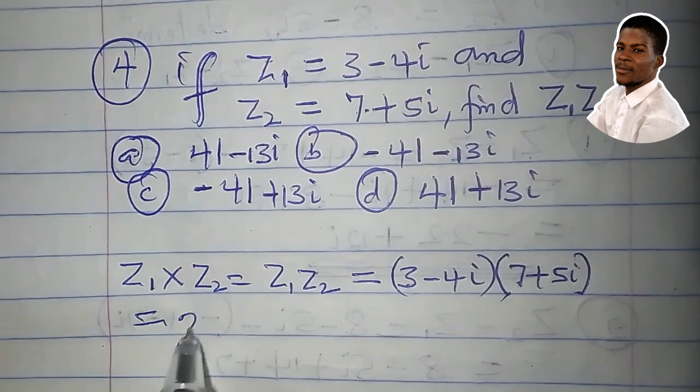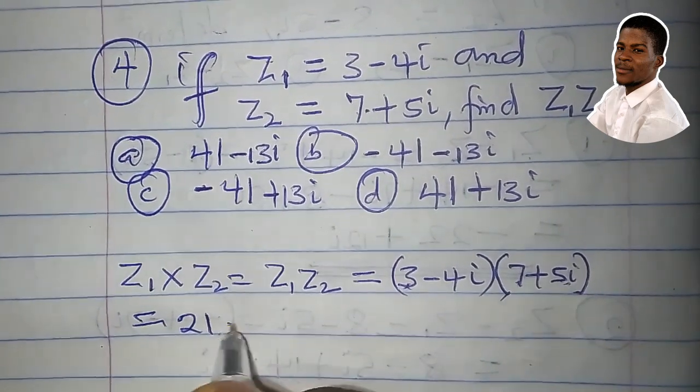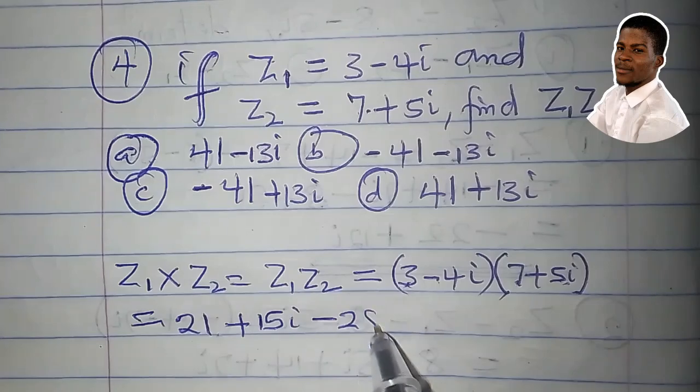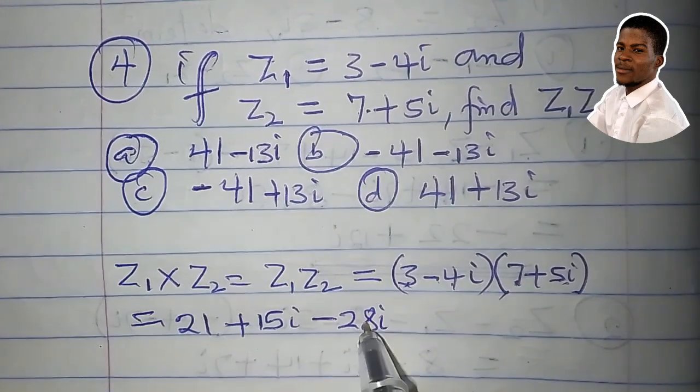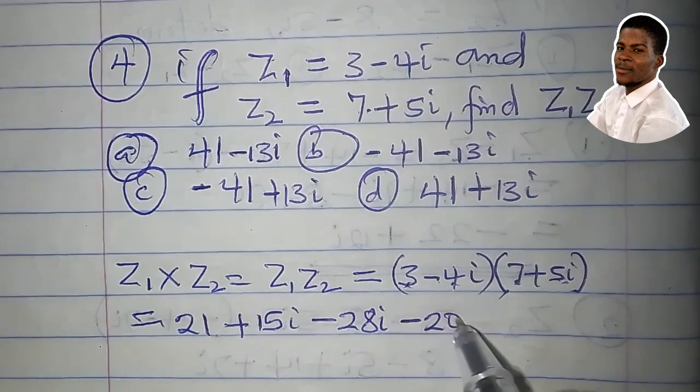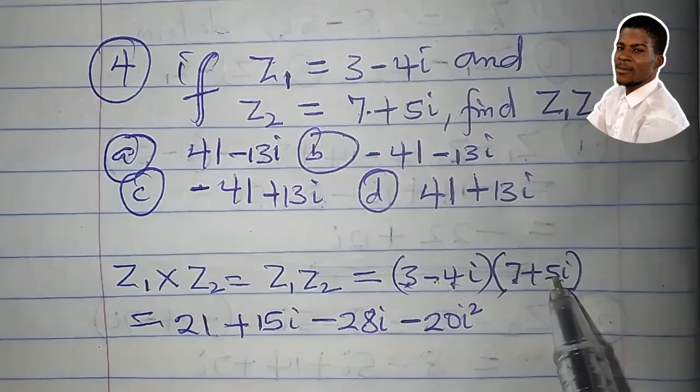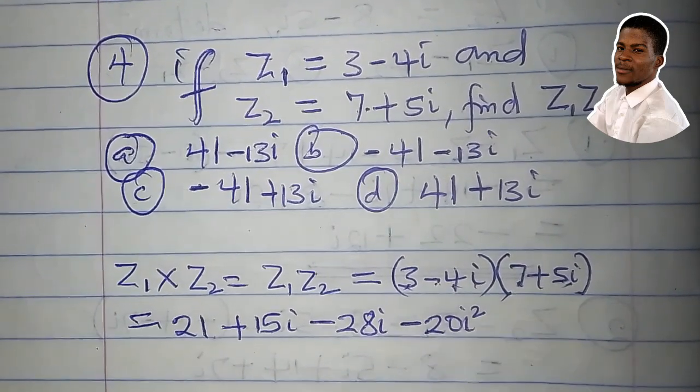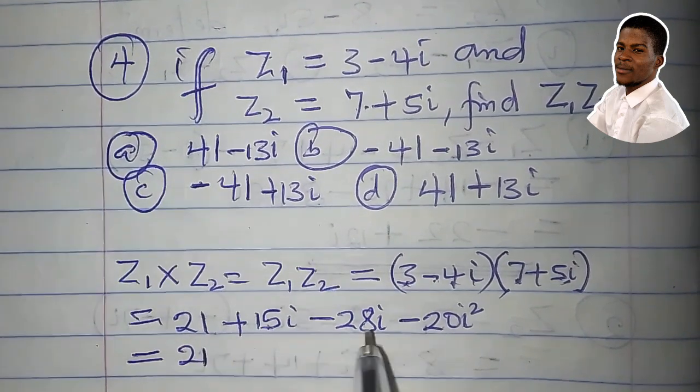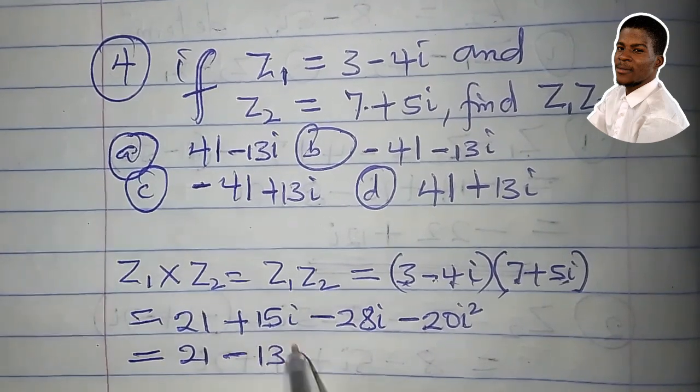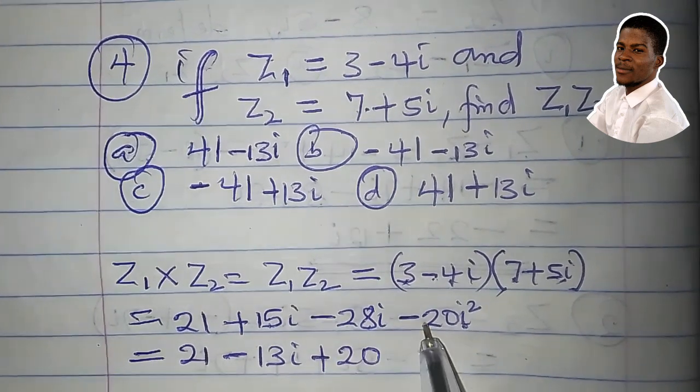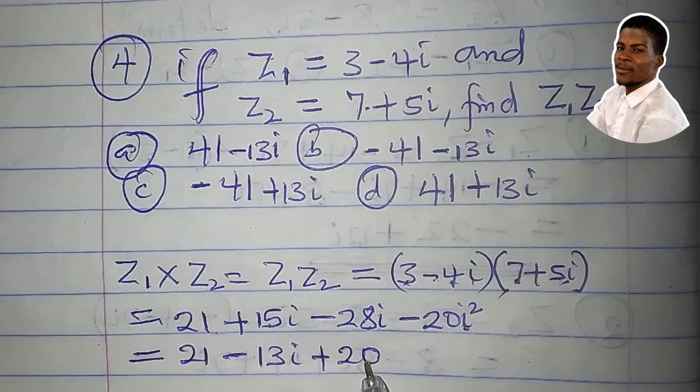3 times 7 is 21. 3 times 5i is 15i. Minus 4i times 7 is minus 28i. Minus 4i times 5i is minus 20i squared. So this is equal to 21. 15i minus 28i is minus 13i. i squared is minus 1. So we're having plus 20 actually. Minus 20 times minus 1 is positive 20.